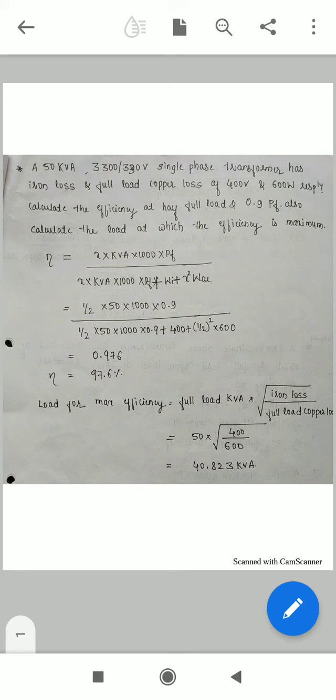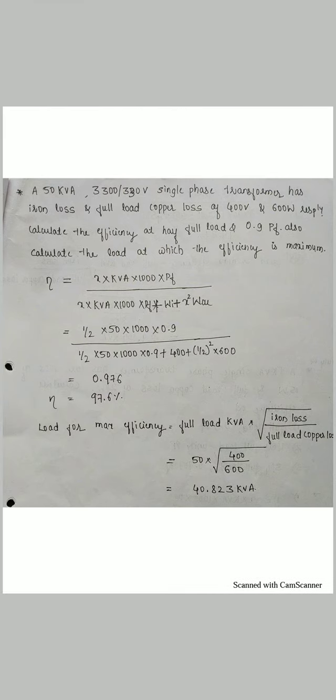First problem: a 50 kVA transformer with voltage ratio 3300/330, where 3300 is E1 and 330 is E2. This single-phase transformer has an iron loss (WCU) of 400 Watt and a full load copper loss of 600 Watt.